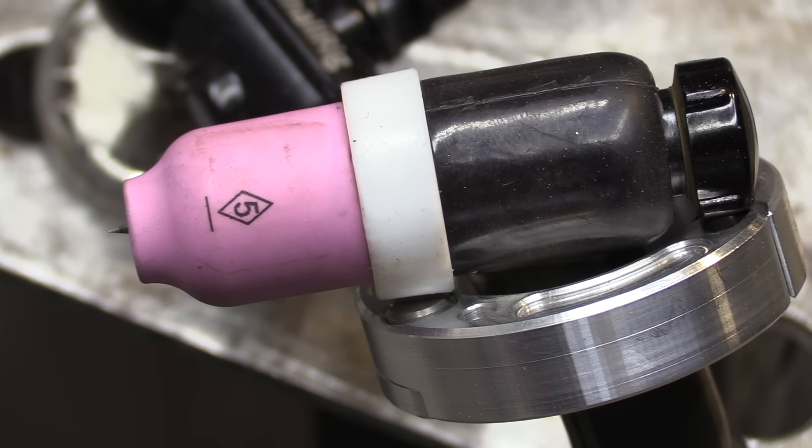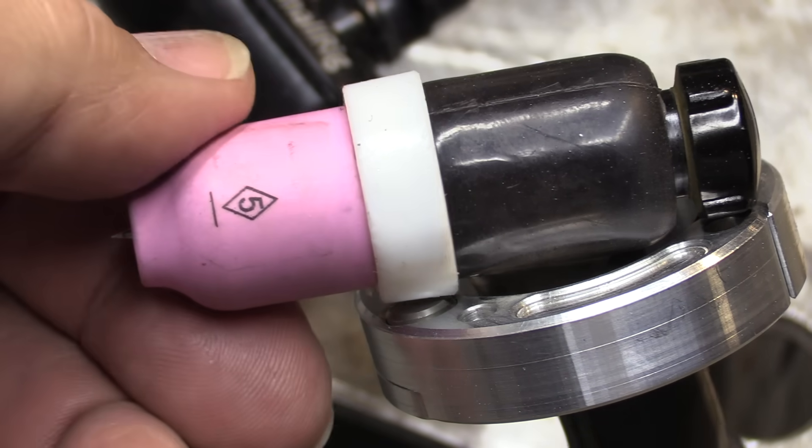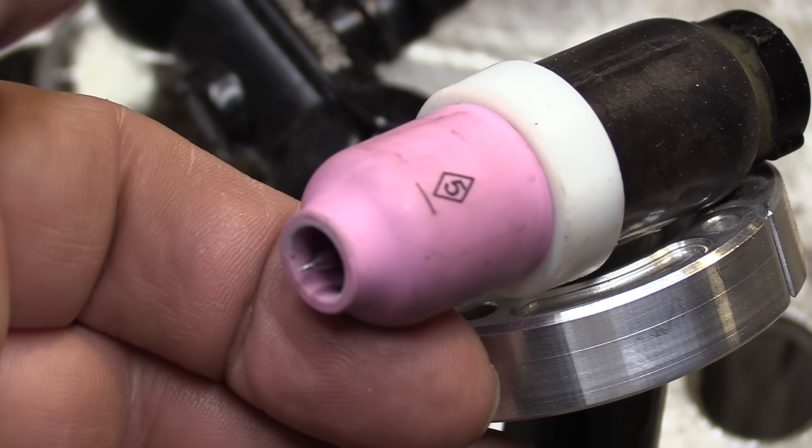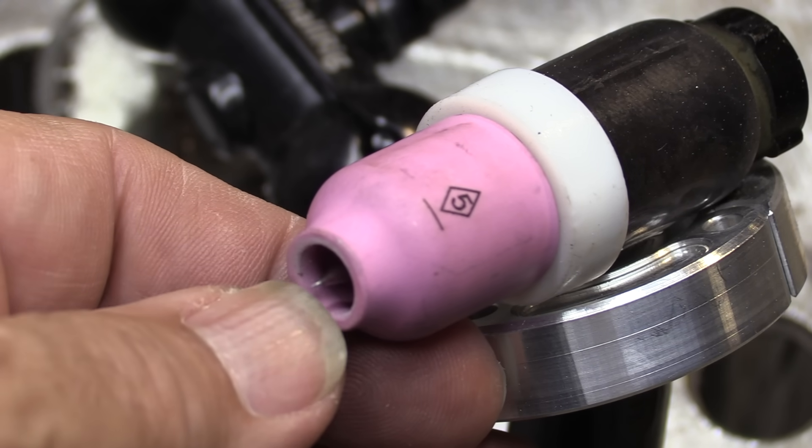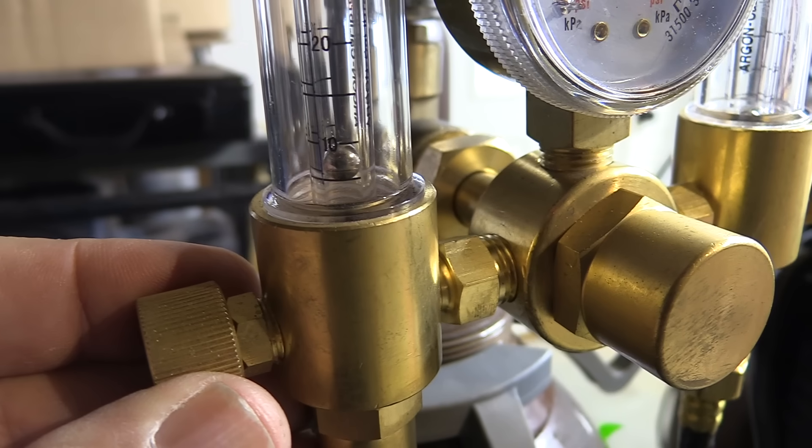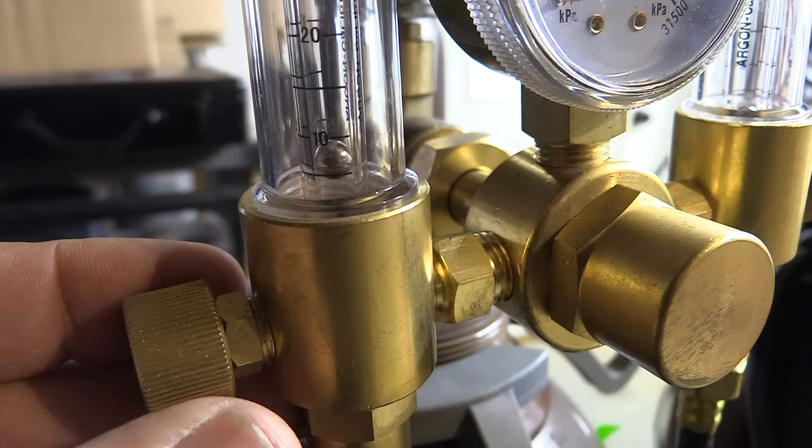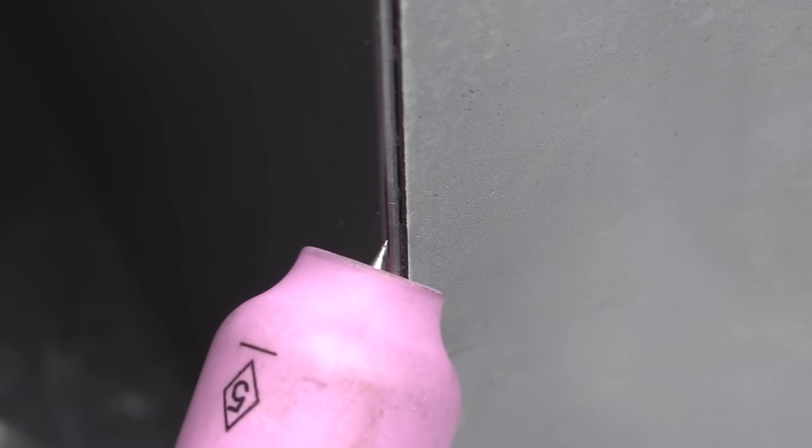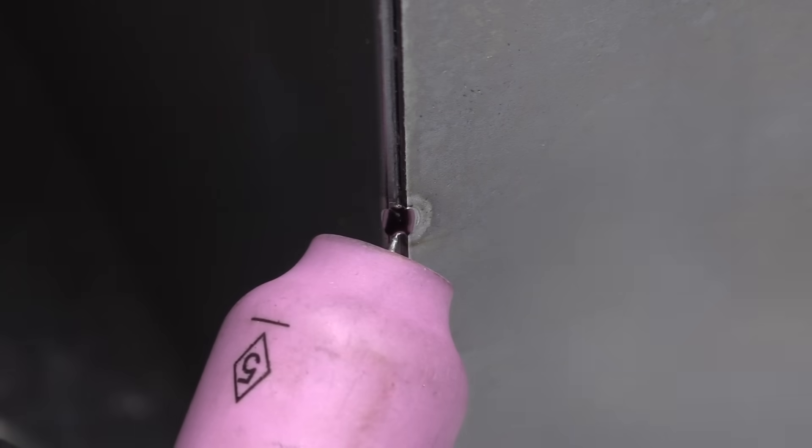I'm set up with a number five gas lens cup and you can notice I've barely got the electrode sticking out the end there. I chose a number five just to save a little gas so I'm going to reduce my flow down a little bit less than 10 CFH, probably more like about eight or nine. And with a nice soft flow of gas that also helps avoiding misfires.